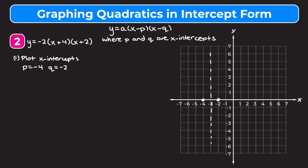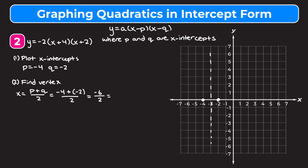Step two is to find the vertex. To find the x-coordinate of the vertex we do p plus q over 2, the average of p and q. So we have negative four plus negative two over two. Negative four plus negative two is negative six, divided by two gives us negative three. That is the x-coordinate of our vertex.